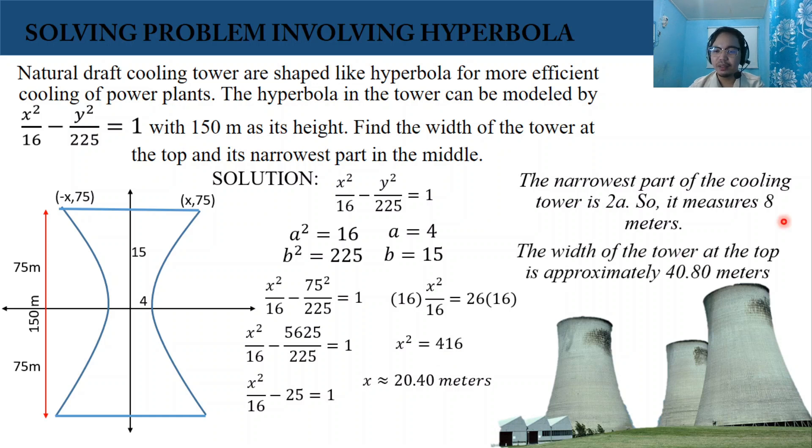Then the width of the tower at the top is approximately 40.80 meters. So we have this one, the narrowest part in the middle, 8 meters.